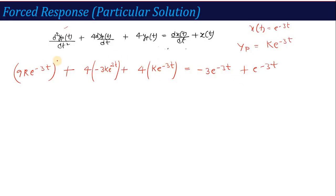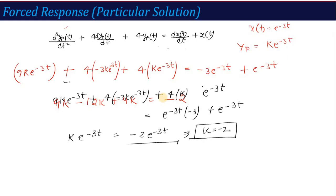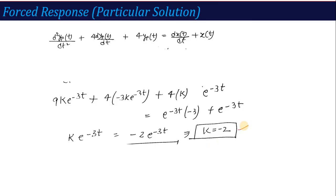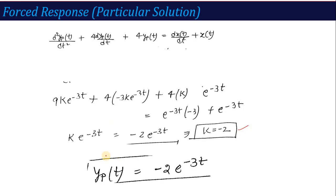Cancelling the common e^(−3t) factor throughout, we get 9K − 12K + 4K = −2, which gives K = −2. Therefore, the particular solution is y_p(t) = −2·e^(−3t). With the particular solution calculated, we can now determine the force response.